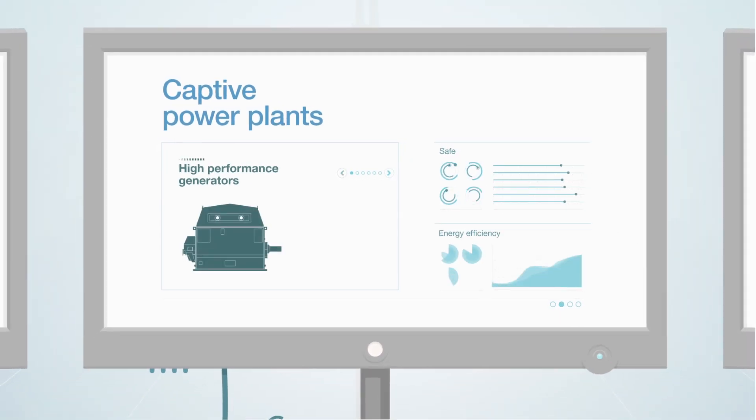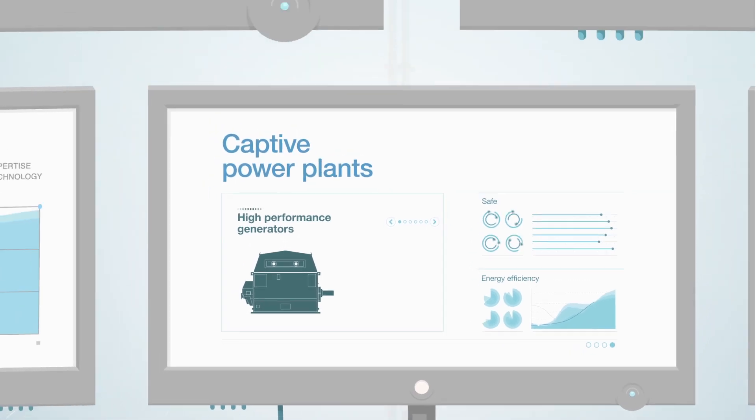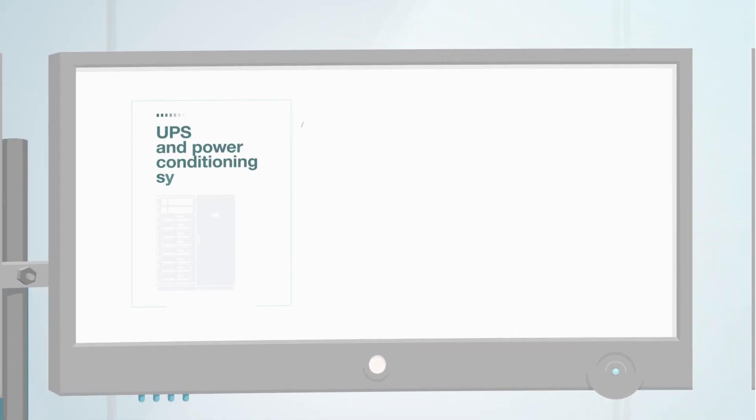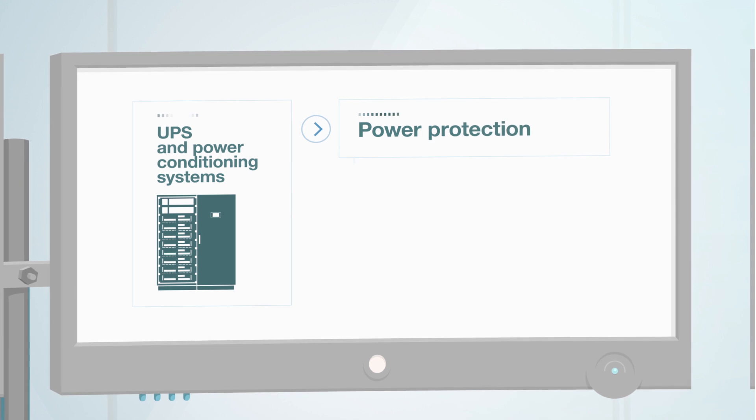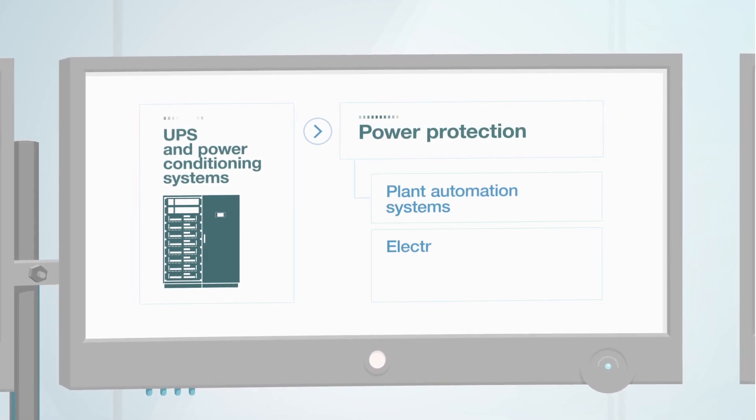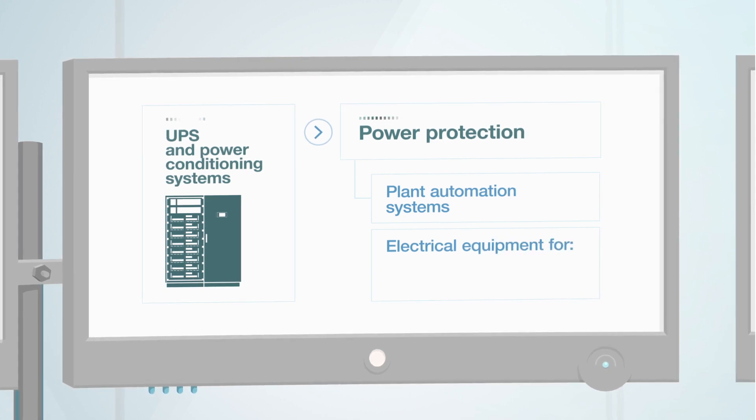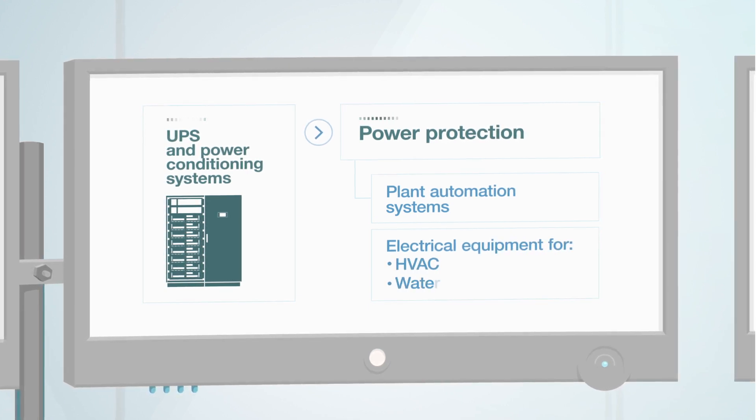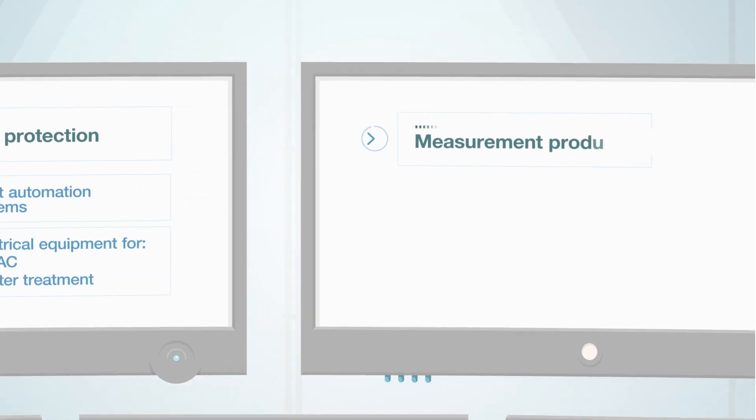For captive power plants, ABB also offers high-performance generators. Additionally, ABB supplies UPS systems for power protection of critical applications, such as plant automation systems, and electrical equipment for auxiliary processes, such as HVAC and water treatment, as well as measurement products, PLC and DCS systems.